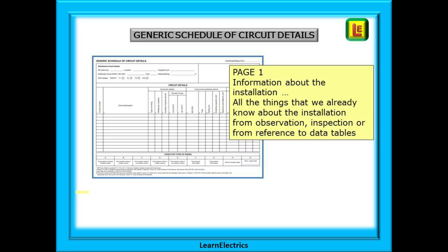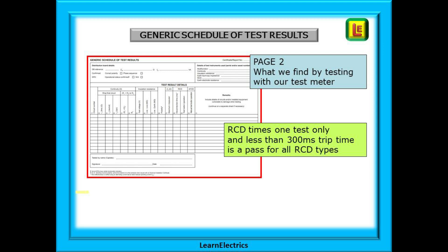The first page is the Generic Schedule of Circuit Details. This is information about the installation that we can gather without using a test meter — all the things that we already know about the installation from observation, inspection, or from reference to data tables. The second page is the Generic Schedule of Test Results, all the things that we can find by testing or calculation.